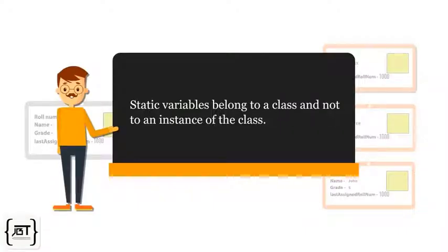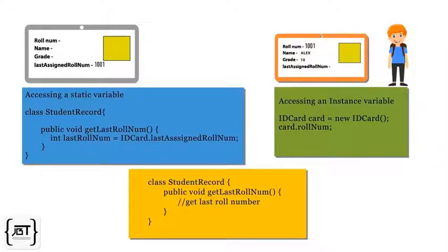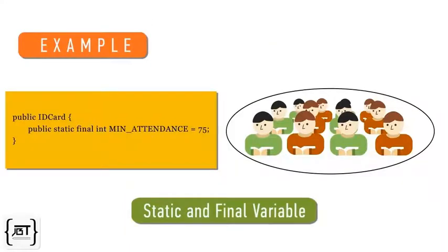Let's recap. In this video, we learned about static variables. Static variables are those that belong to a class and not to an instance of the class. A variable is declared static by using the keyword static. There is a single copy of the static variable for the class; each object of the class does not get its own copy. Since a static variable does not belong to an object, we do not need an object reference variable to access its value. A static variable is accessed directly from the class. Static and final variables are used to define constant values.